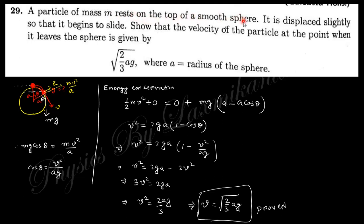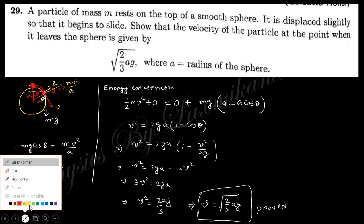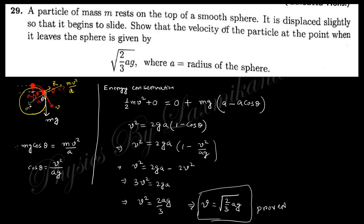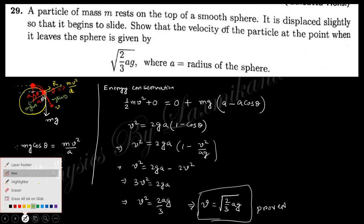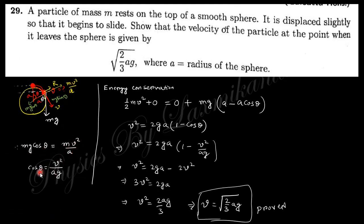The particle starts at the top of the sphere — this is the initial position — and slides down. We need to find the velocity of the particle at the point when it leaves the sphere. When it leaves, the reaction force must be zero because there is no contact. The m*g component along that direction is m*g*cos(theta) and m*g*sin(theta). So m*g*cos(theta) must equal the centripetal force, m*v²/a. Therefore cos(theta) = v²/(a*g).